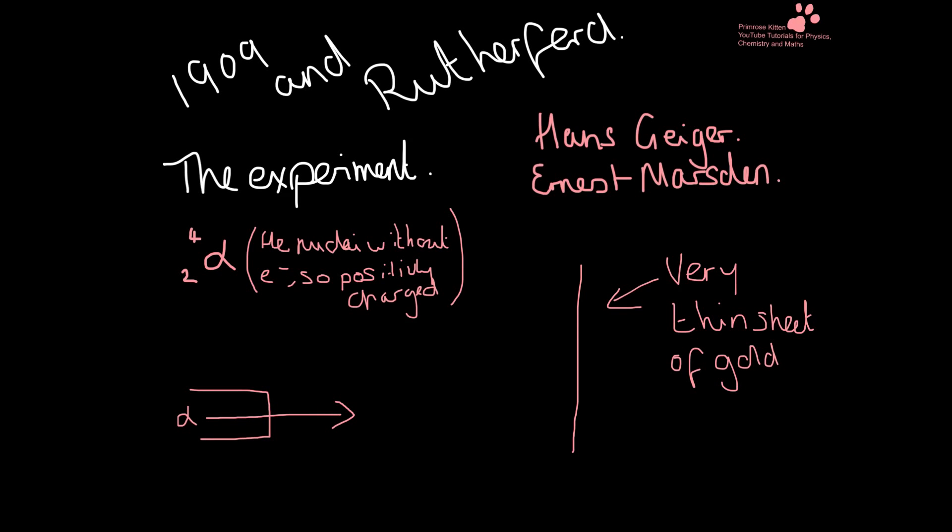Moving on to 1909 and Ernest Rutherford — two young experimenters in his lab, Hans Geiger and Ernest Marsden, did an experiment. You may think it's slightly unfair that Rutherford is more commonly known for this even though he didn't actually do the experiments, but you need to think about the way peer review is done. Rutherford is the one that's known for this even though he didn't actually carry out the experiments.